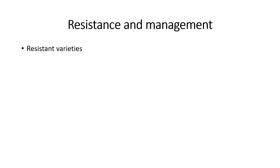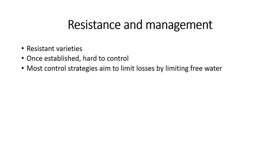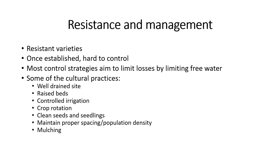Now let's look at the management strategies. Using resistant varieties, if available, would be better. Once established, it is hard to control, therefore preventive measures are better. Most control strategies are aimed at limiting losses by controlling or limiting free water. Cultural practices that can be adopted include choosing a site where drainage is better, growing crops on raised beds at least 15 to 20 centimeters in height, using controlled irrigation such as drip irrigation, practicing crop rotation with non-host crops, using clean seeds and seedlings to avoid early infection, maintaining proper spacing to allow drying of the canopy, and mulching the beds to reduce infection caused by splashing of infected soil.